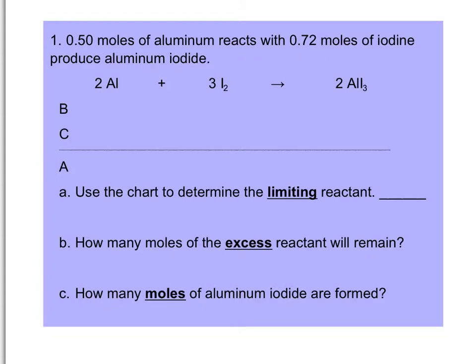When you have a stoichiometry problem involving a limiting or excess reactant, the problem will give you the starting amounts of both reactants. In this simpler problem, we are given the starting mole amounts directly. We have 0.5 moles of aluminum reacting with 0.72 moles of iodine to produce aluminum iodide. We take those starting mole amounts and put them right into the chart.